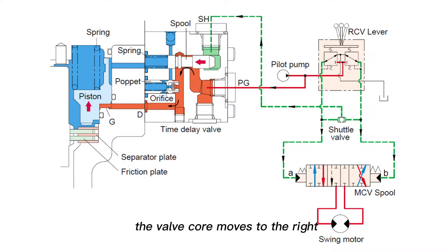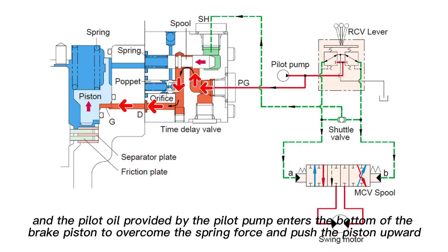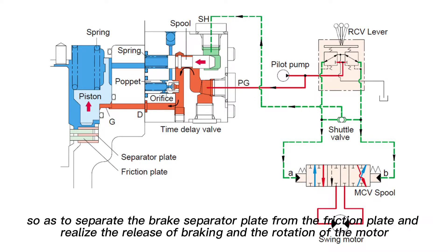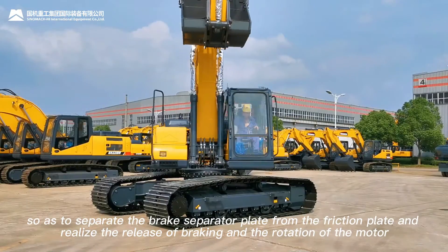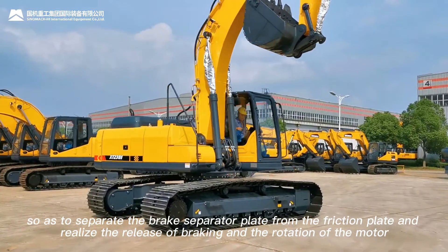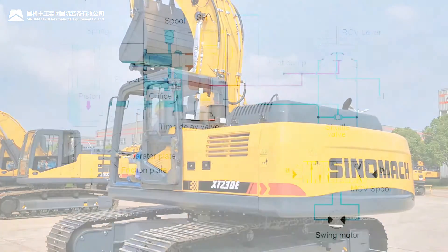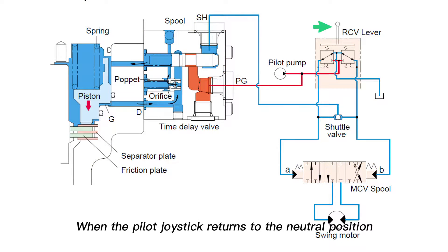The valve core moves to the right and the pilot oil provided by the pilot pump enters the bottom of the brake piston to overcome the spring force and push the piston upward, so as to separate the brake separator plate from the friction plate and realize the release of braking and the rotation of the motor.